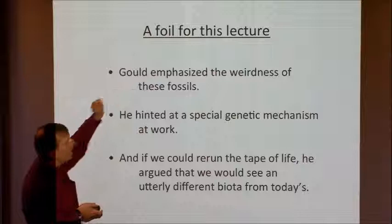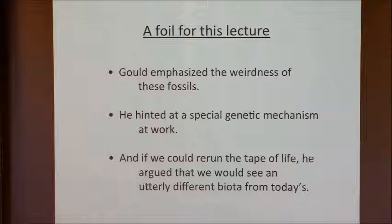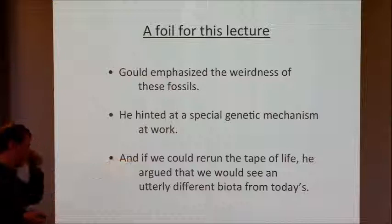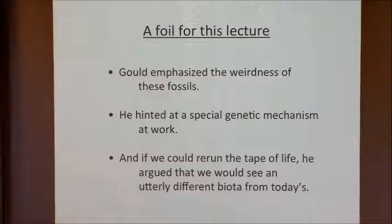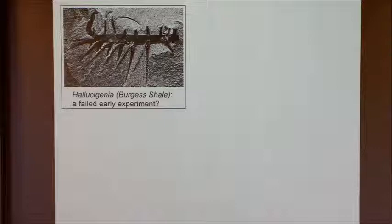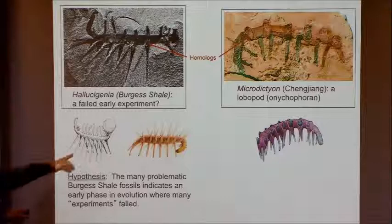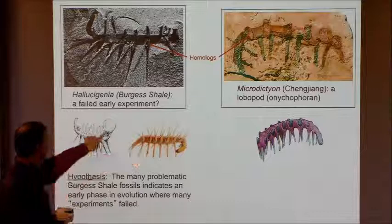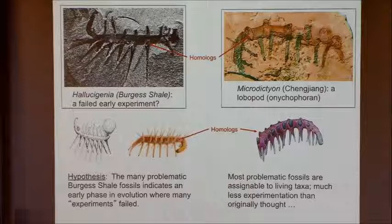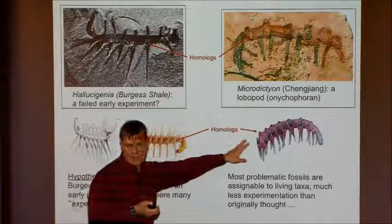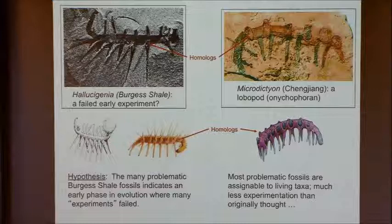As a foil, I'm going to pick on the deceased Steve Gould. Gould emphasized the weirdness of these fossils and hinted that a special genetic mechanism might be at work to create the phyla. He argues in Wonderful Life that if we could rerun the tape of life we would see an utterly different biota from today's. I'm going to argue these things are almost certainly not true. Hallucigenia was used as a 'failed early experiment' — but it turns out Simon Conway Morris had the thing upside down. Walking on spines doesn't make much sense. It looks like it's actually an onychophoran, a basal arthropod. Most problematic fossils have been assigned fairly comfortably to existing phyla — it's just 1 or 2 or 3 out of 30, not 20 or 30.